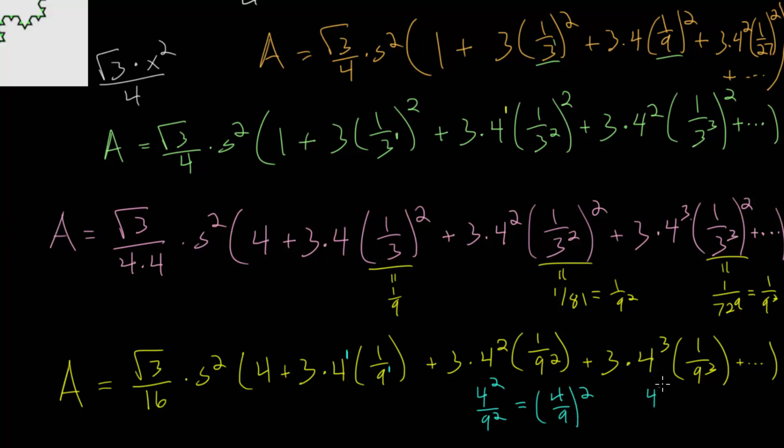This will be 4 to the third over 9 to the third, which is really just 4 over 9 to the third power, and so on.